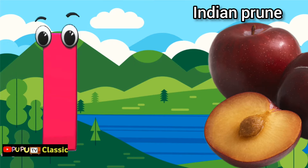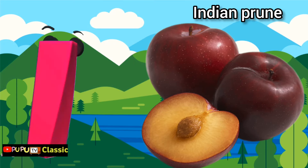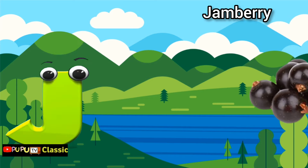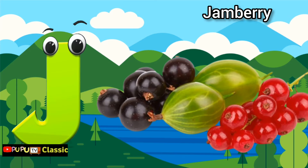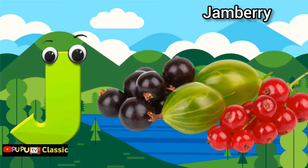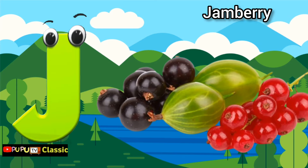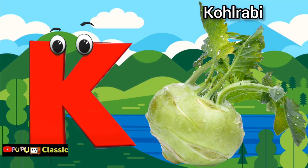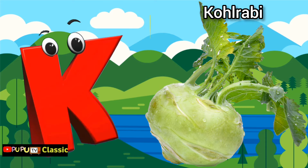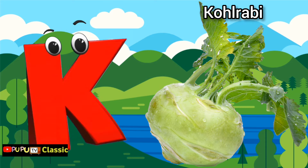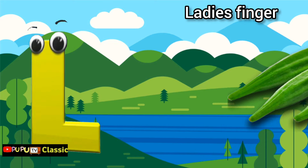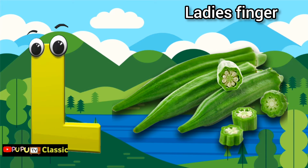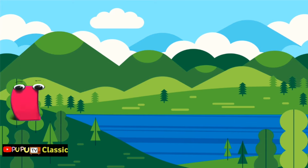I is for Indian prune, Indian prune. J is for jamberry, jamberry. K is for kohlrabi, kohlrabi. L is for lady's finger, lady's finger.